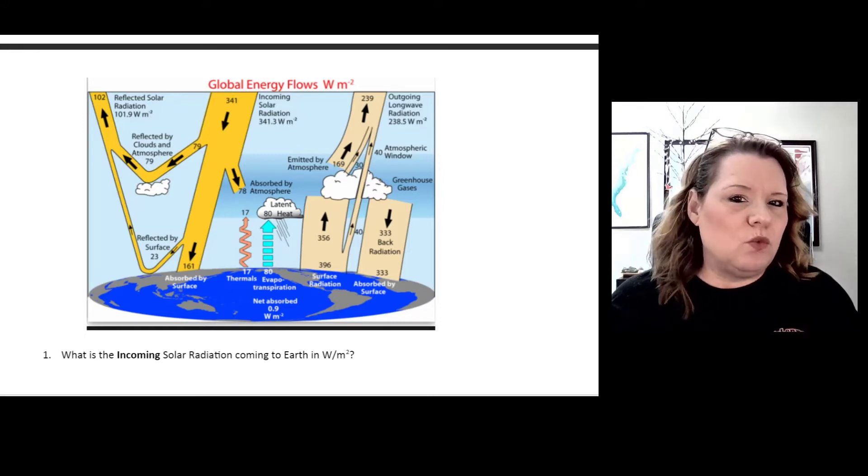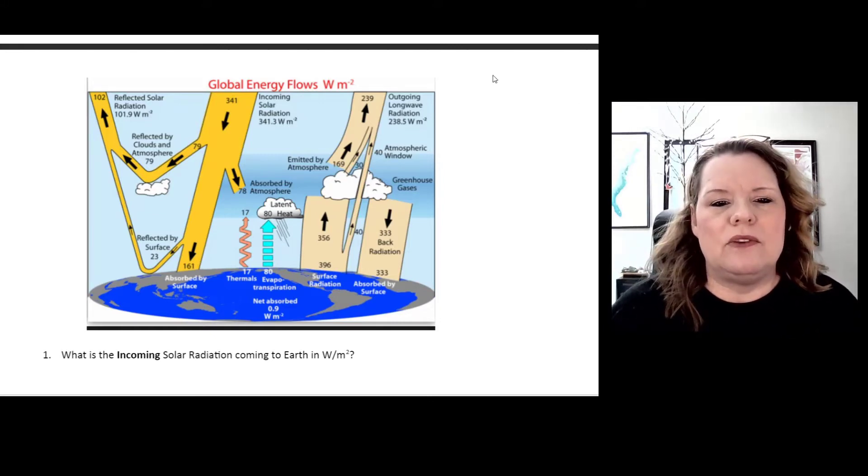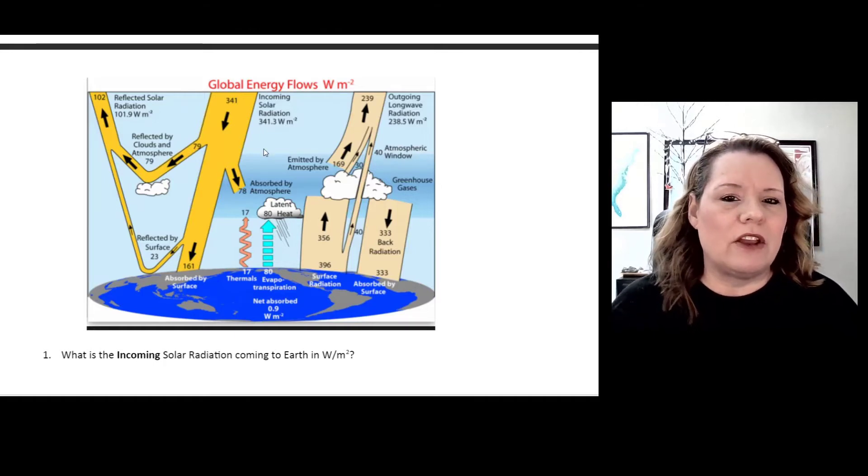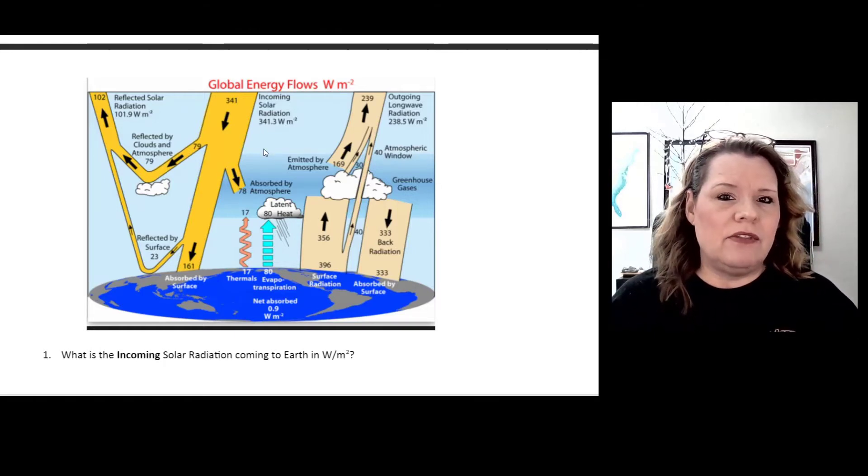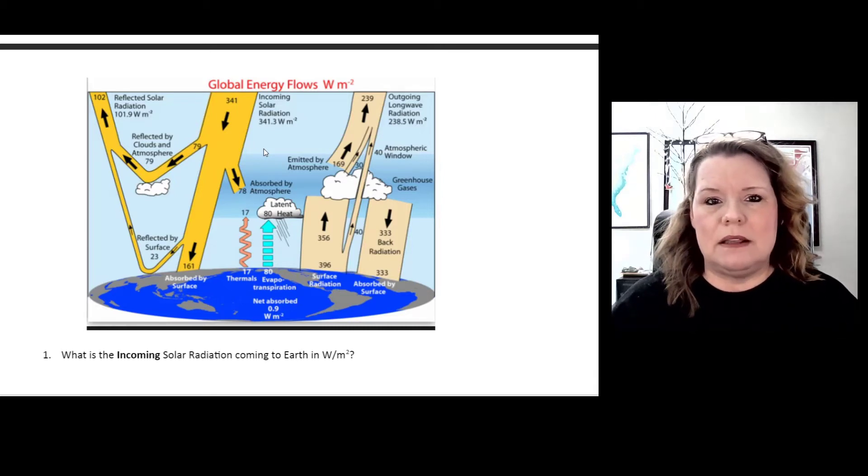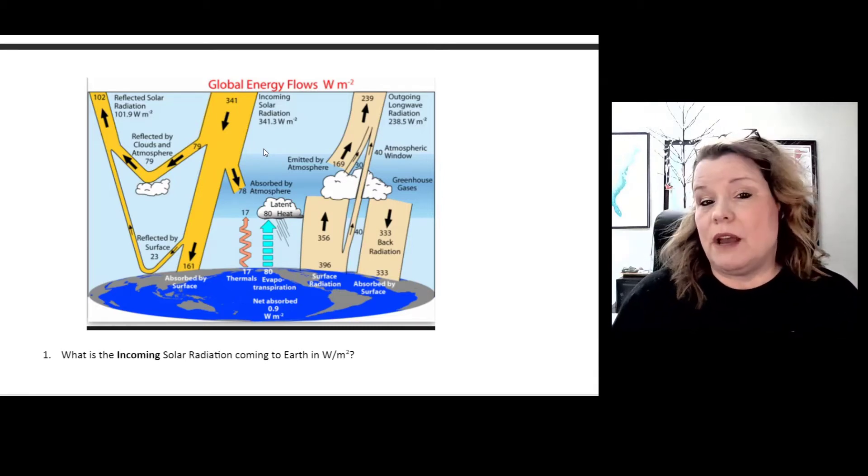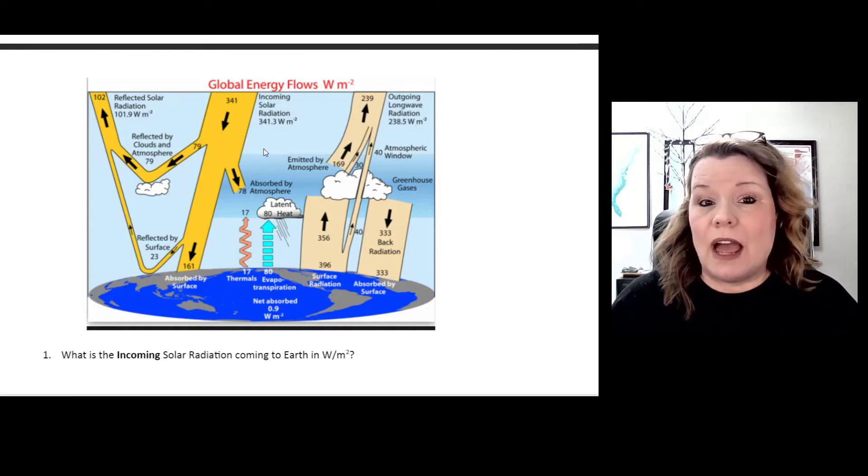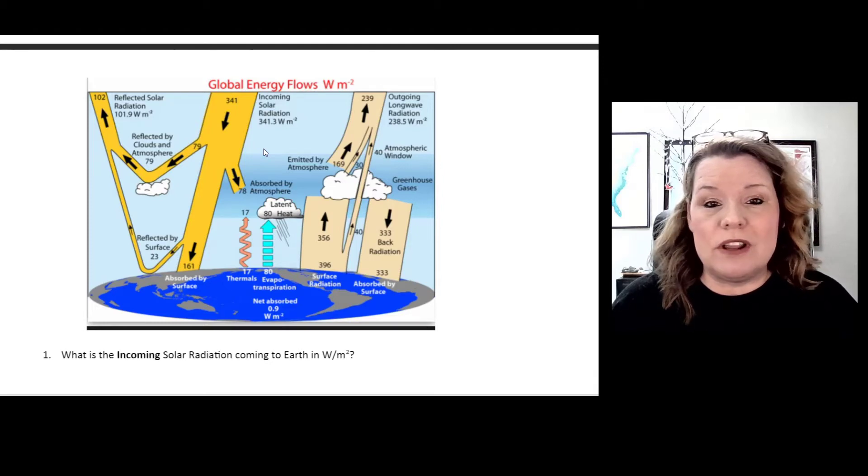But if we change one dynamic, such as we have more greenhouse gases in the atmosphere that could retain heat, then we could end up having a positive feedback, which means we'd have a warming situation. So let's say we have a very reflective surface that's covered in glaciers. We are in an ice age.